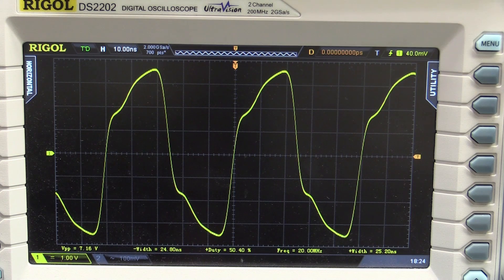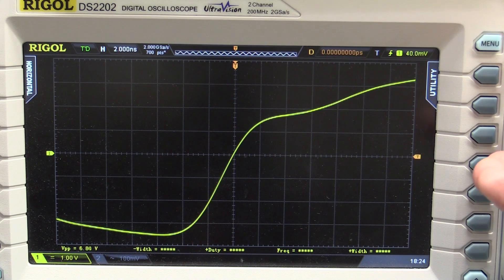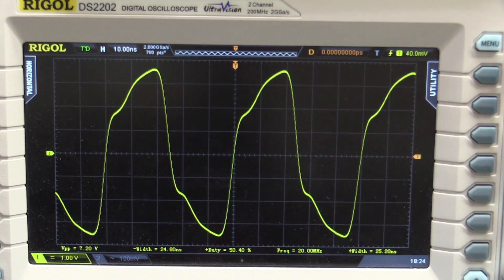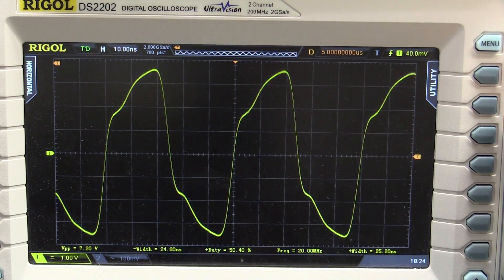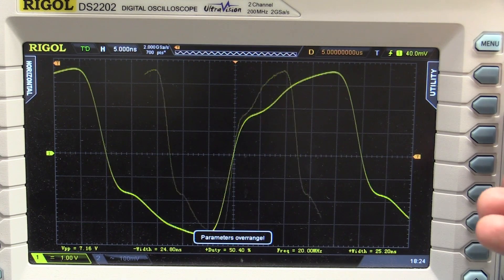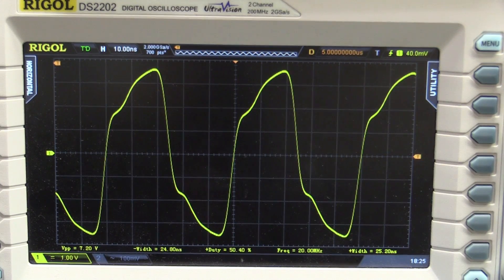And does the Rigol DS-2000 series scope do it? Well, look at that, that's at no offset whatsoever, beautifully clean, and that's at 5 microseconds offset, beautifully clean, and sharp again, no problems at all on the DS-2000 series.